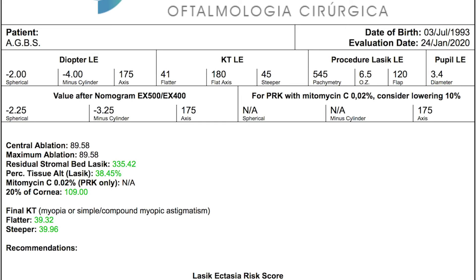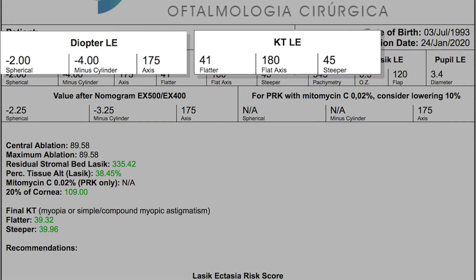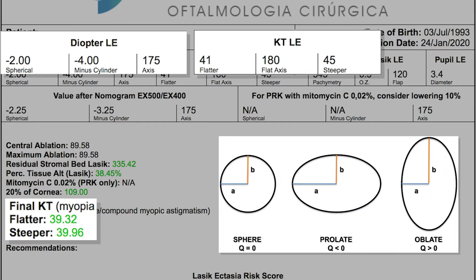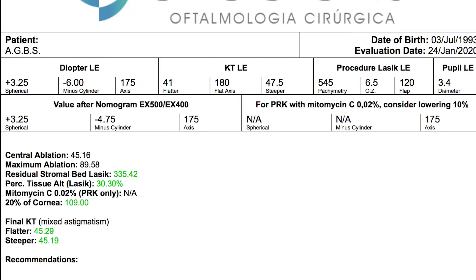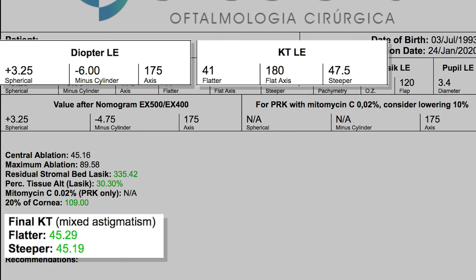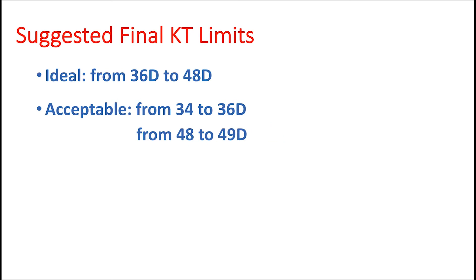The next result displayed is predicted keratometry. The user should check this result to avoid a final cornea that is excessively ablated or hyperprolated. Keratometry calculations can be tricky, particularly in patients with mixed astigmatism. The limits suggested by the calculator are also presented.